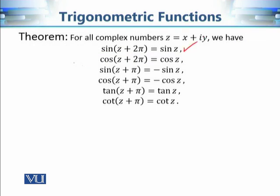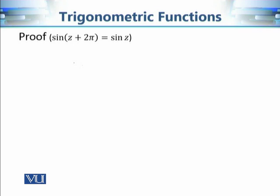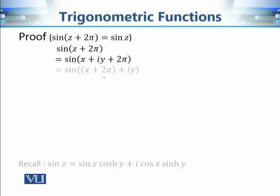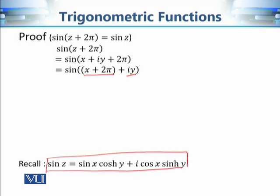Using these formulas, we can prove that sin(z + 2π) = sin(z), showing that sine is periodic with period 2π in the complex case just as in real analysis. Similarly, cos(z + 2π) = cos(z). To prove this, if z = x + iy, then sin(z + 2π) = sin((x + 2π) + iy), and gathering real and imaginary parts gives sin(x + 2π + iy).